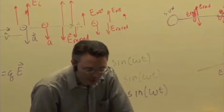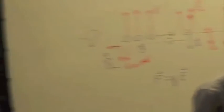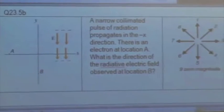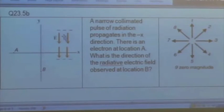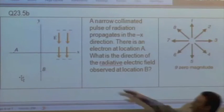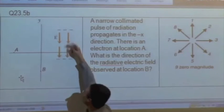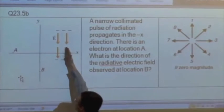Let's try this one. This is a good one. This is just on simple idea of re-radiation. You have here a pulse of electromagnetic radiation, and the original radiated electric field is pointing downward. And the whole pulse is moving in the negative x direction. And there happens to be an electron at location a.